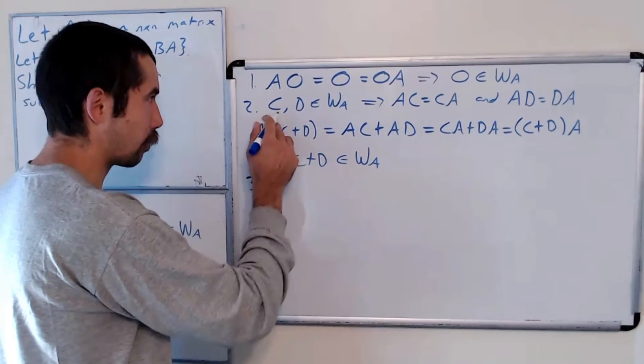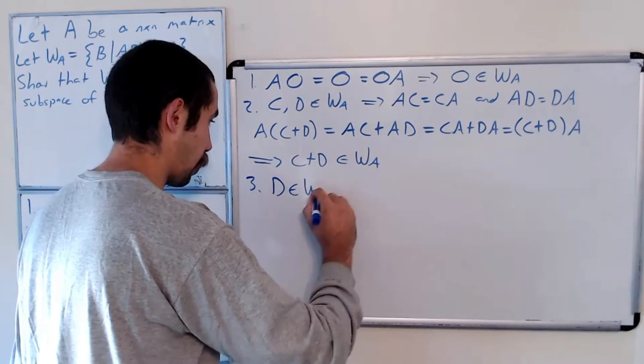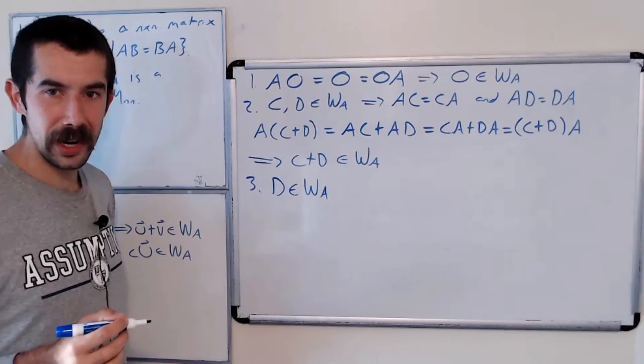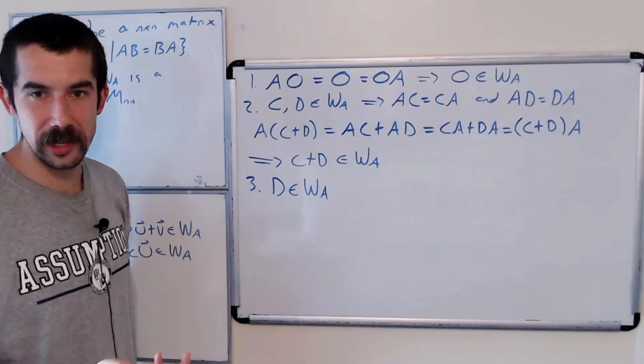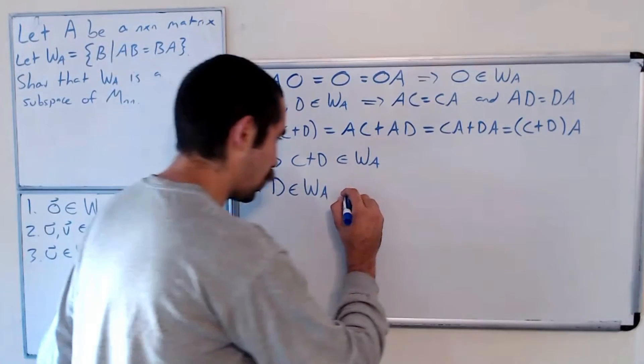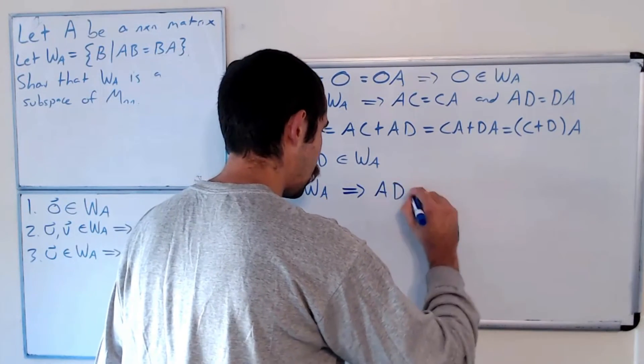We'll say that D is a matrix in W sub A. We want to show that any scalar times D is also. So just as a reminder, what does it mean for a matrix to be in W sub A? It means AD equals DA.